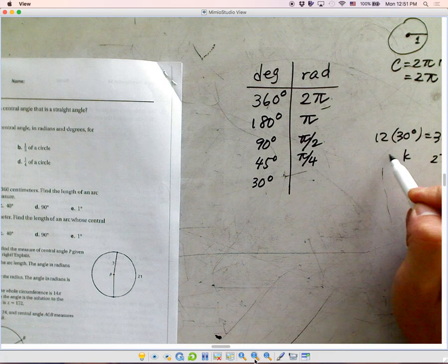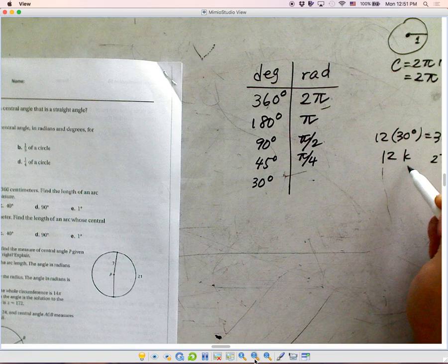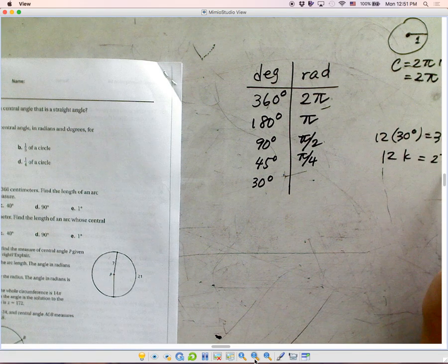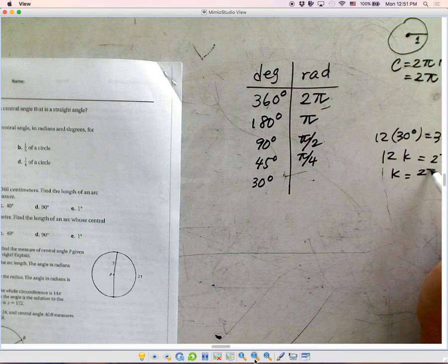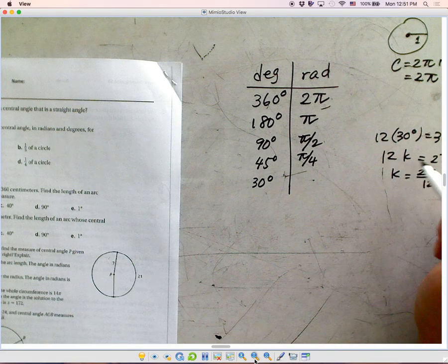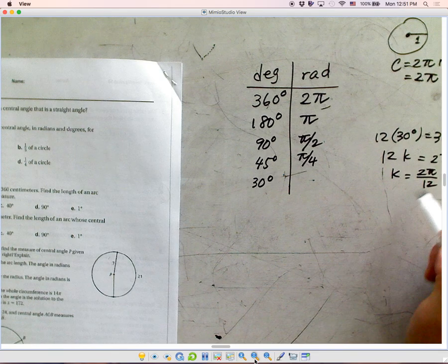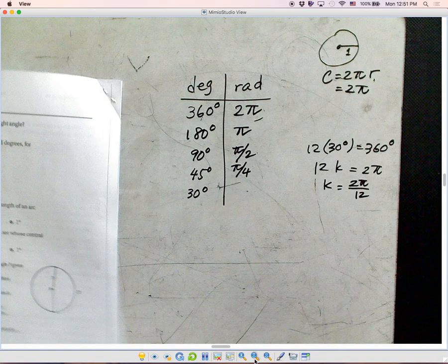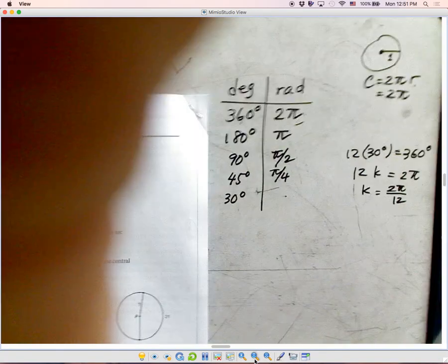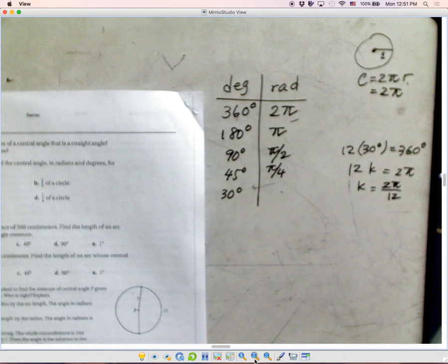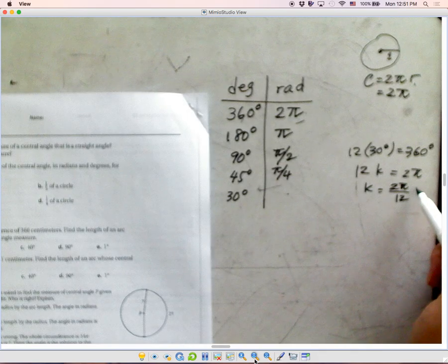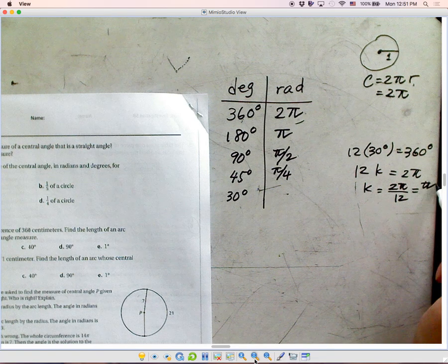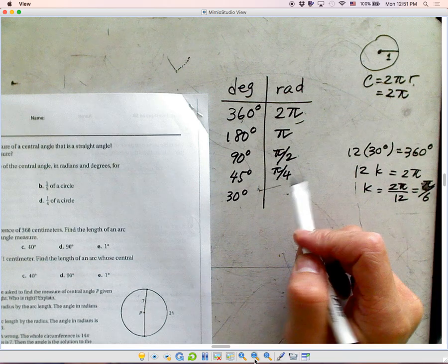What if 360 is 2π? What would that be? 12 times some number, some degrees k, should be equal to 2π. So k should be equal to 2π divided by 12. I'm dividing 12 to both sides. 2 and 12 is the multiple of 2. So we can divide both sides, both top and bottom by 2. So we should have π over 6. So that's π over 6.